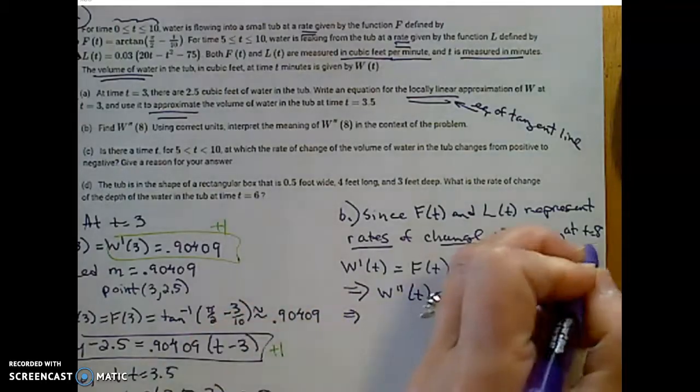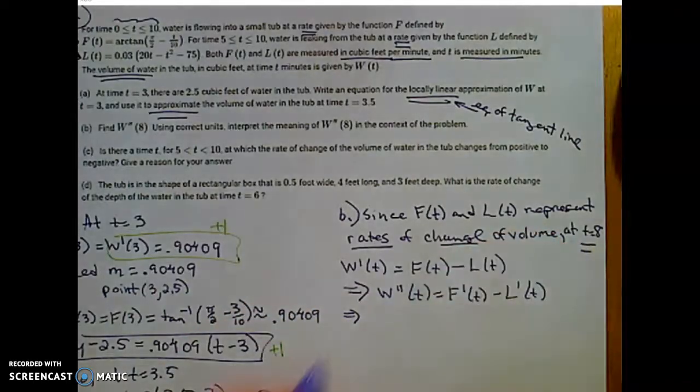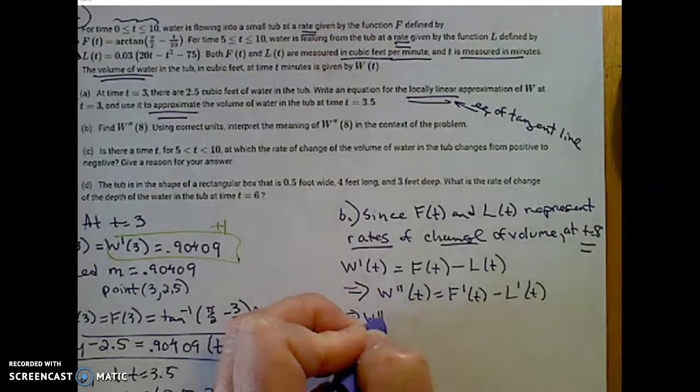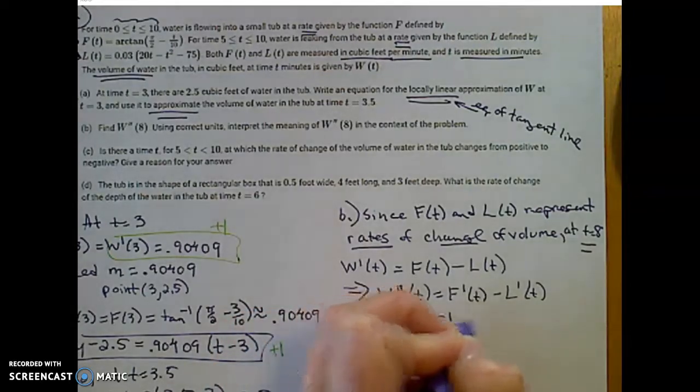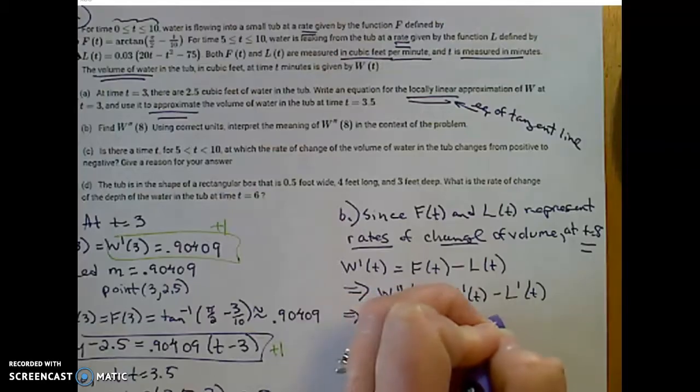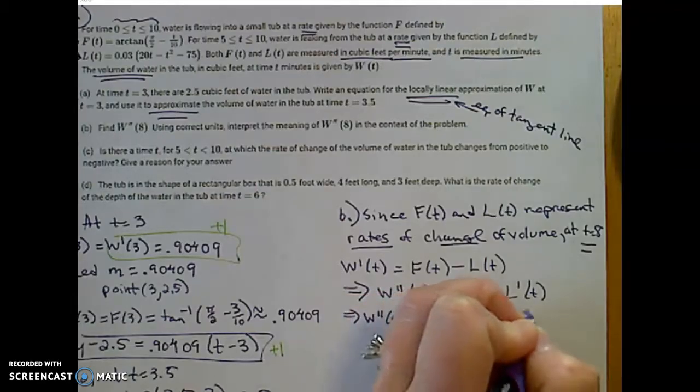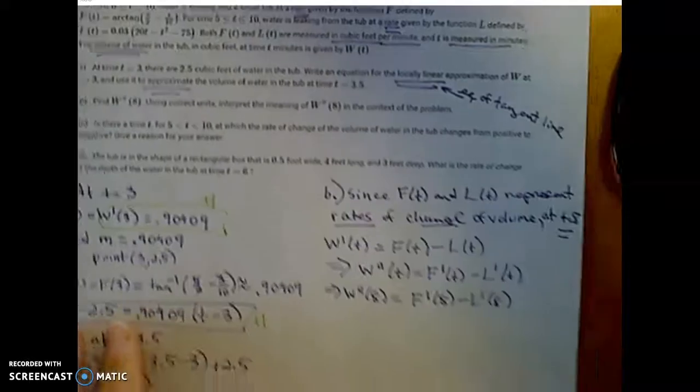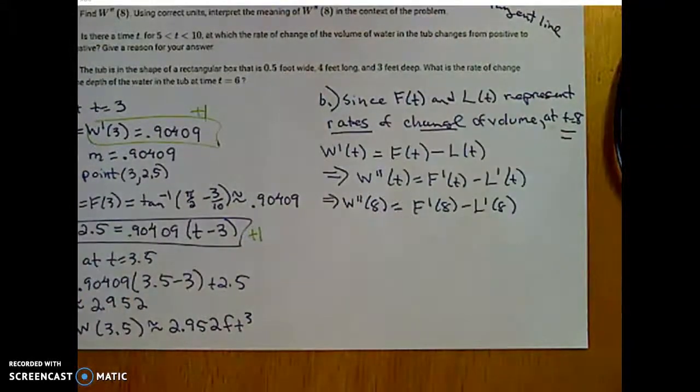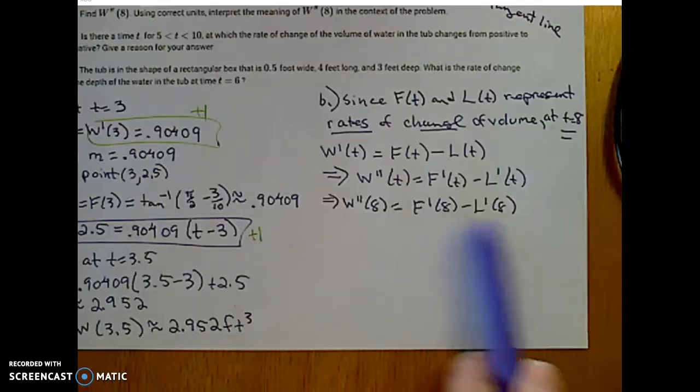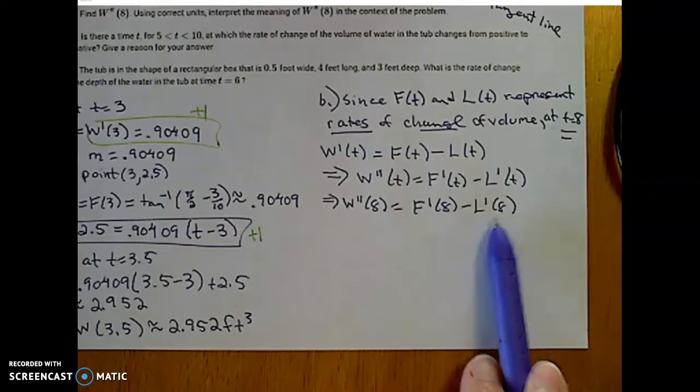I'm specifically looking at time equal to 8. So I really need the second derivative of w for time equals 8, which will equal f prime of 8 minus l prime of 8. This is pretty calculator intensive right now. So let me pause and show you what I'm going to plug into my calculator, and I'm going to find the numeric derivative for those two things.